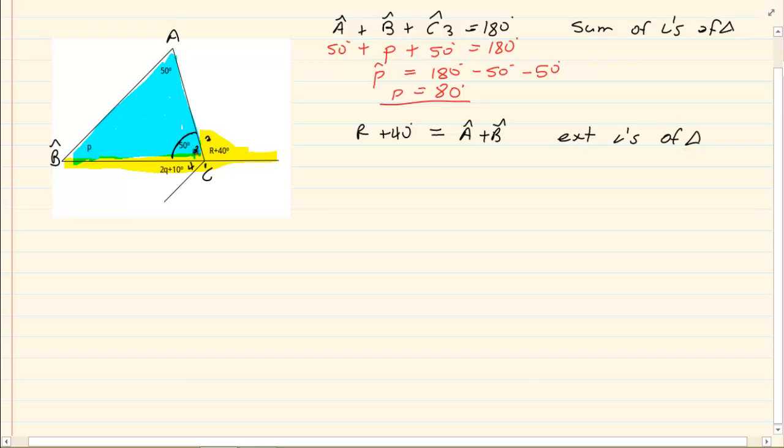You could have also said that C3 plus C2 is equal to 180 degrees and your reason would be adjacent supplementary or angles on a straight line, whichever you are comfortable with.